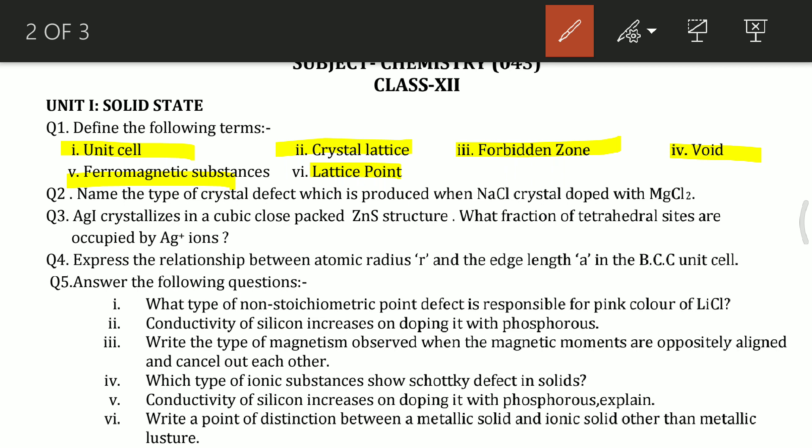Question number 2: name the type of crystal defect which is produced when NaCl crystal is doped with MgCl2. You need to explain what defect this is.